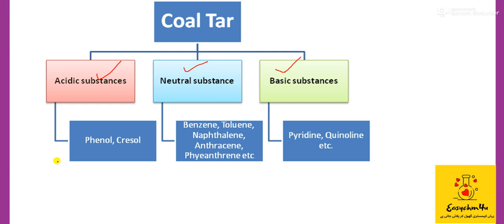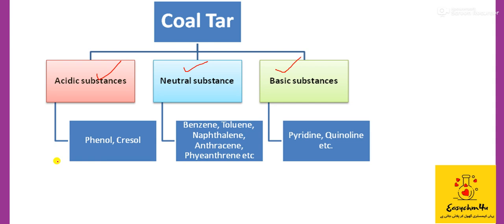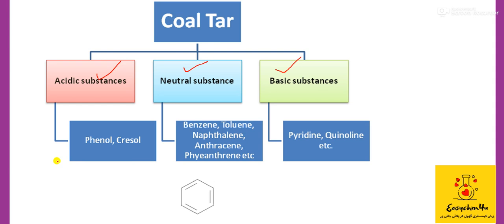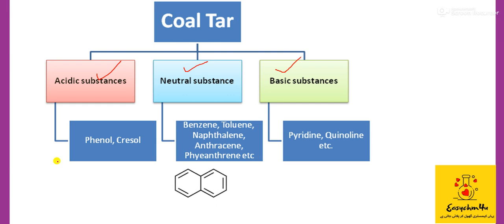The acidic substances from coal tar include phenol and cresol. You should know the structure of these compounds as they are important for organic chemistry chapters. When a methyl group is attached to phenol, it is converted into cresol. The neutral substances include benzene, which we obtain from coal tar, toluene, naphthalene — where two benzene rings are fused together.